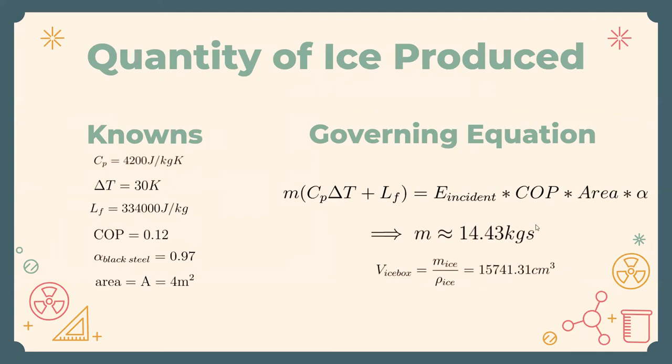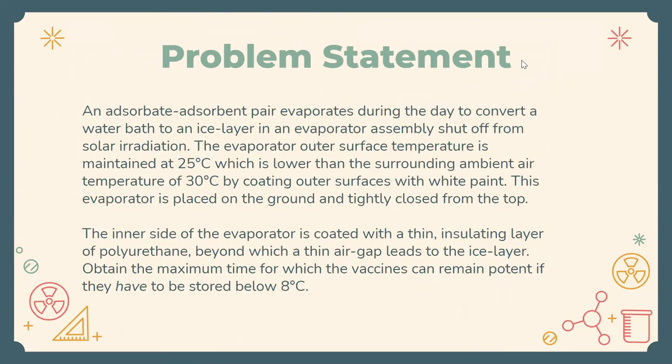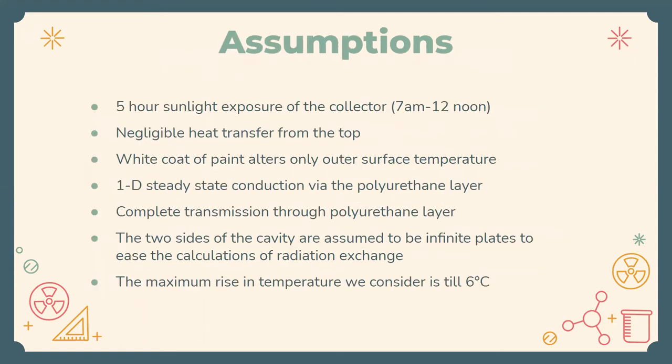Having completed our view of the collector, we now move on to the evaporator. The problem statement for the evaporator is as follows: the adsorbent pair evaporates during the day to convert a water bath to an ice layer. The evaporator outer surface is maintained at 25 degrees Celsius by coating with white paint. The air temperature is ambient at 30 degrees. The inner side of the evaporator is coated with a thin insulating layer of polyurethane, beyond which we have a thin air gap leading to the ice box. Our objective at the end of this section would be to calculate the maximum time for which the vaccines can remain potent if they have to be stored below 8 degrees Celsius.